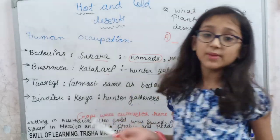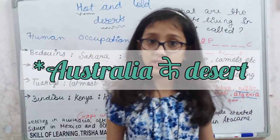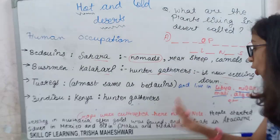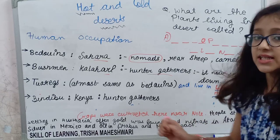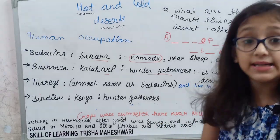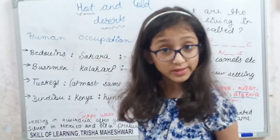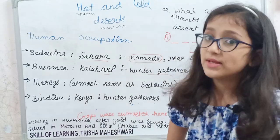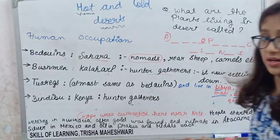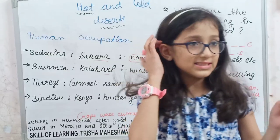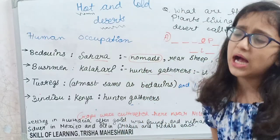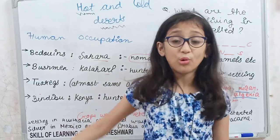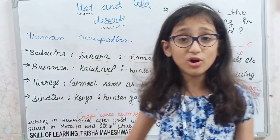People were living in Australia because gold was found there. Then nitrates and copper — these are all minerals — were found in Africa. There is silver in Mexico, and oil in Arabia and the Middle East. So deserts have such a harsh climate — hot, large, and dry — but they contain gold, silver, and many valuable resources.